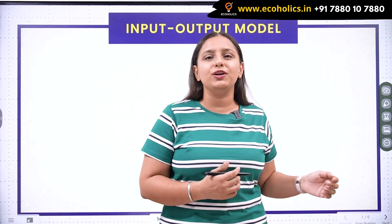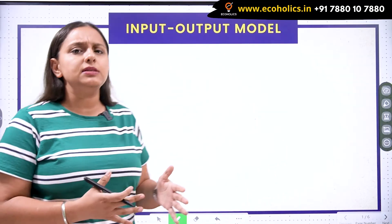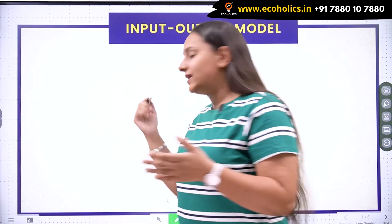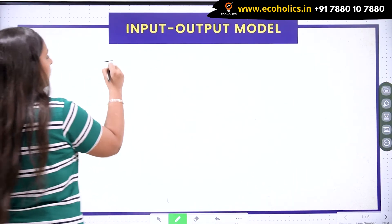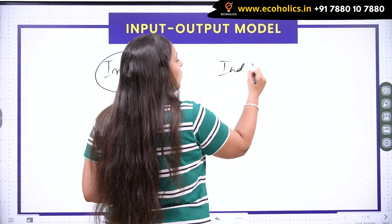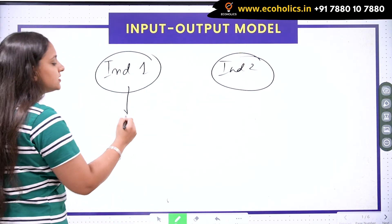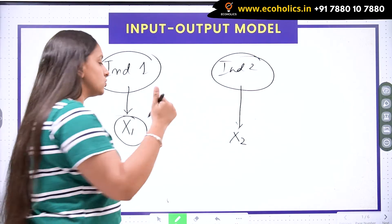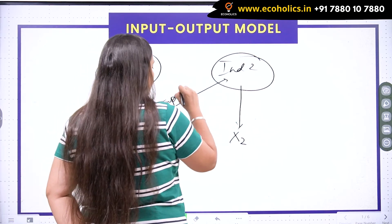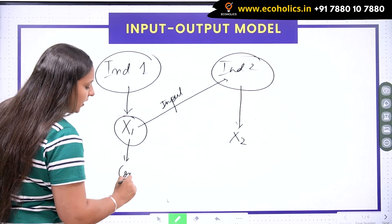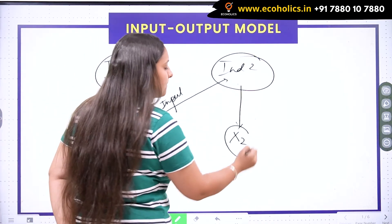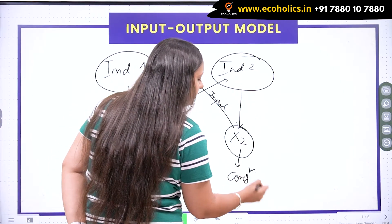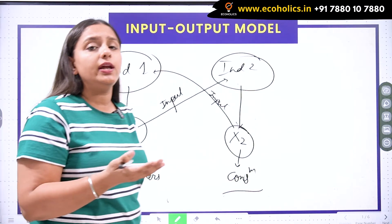So let's get into the video. In the input-output model, there are a number of industries. Let's start with the two-industry case. Industry one produces x1 goods and industry two produces x2 goods. Part of x1 goes to industry two as raw material input, and part goes to consumers as final demand. Similarly, part of x2 goes back to industry one as input, and the rest goes to consumers for final consumption. The industries are interdependent.